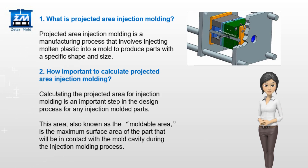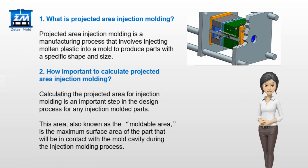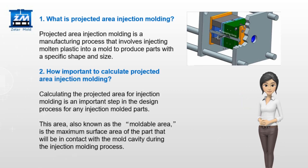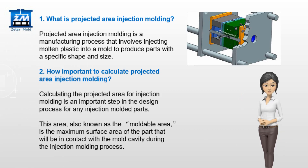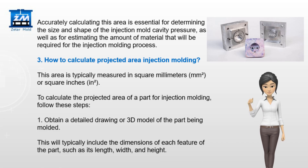Calculating the projected area for injection molding is an important step in the design process for any injection molded parts. This area, also known as the moldable area, is the maximum surface area of the part that will be in contact with the mold cavity during the injection molding process. Accurately calculating this area is essential for determining the size and shape of the injection mold cavity pressure, as well as for estimating the amount of material required.